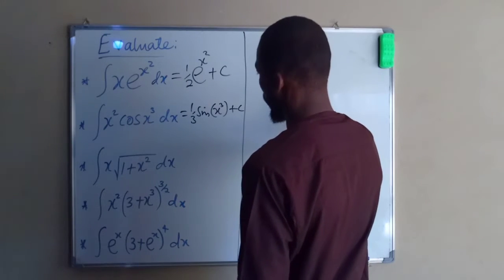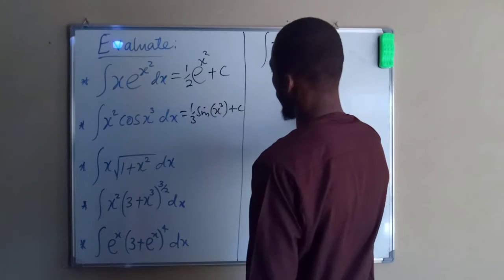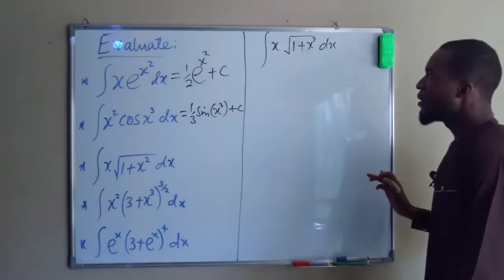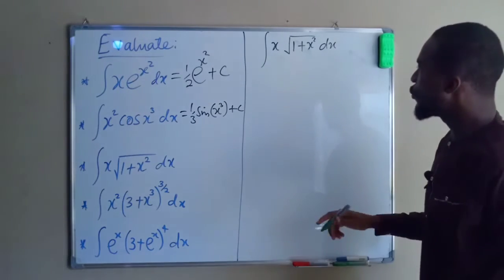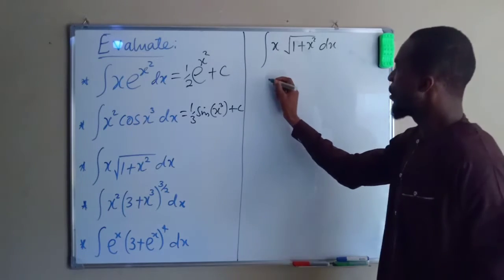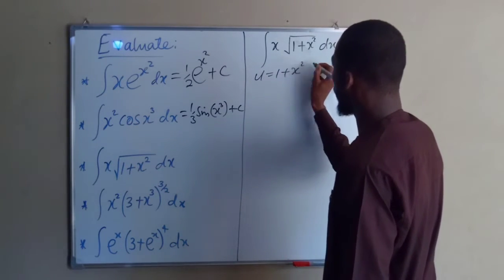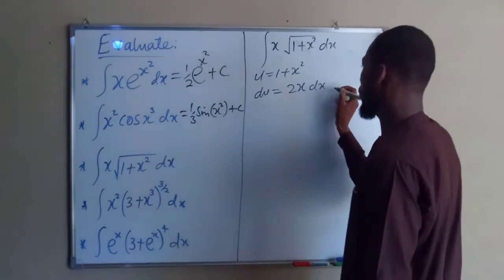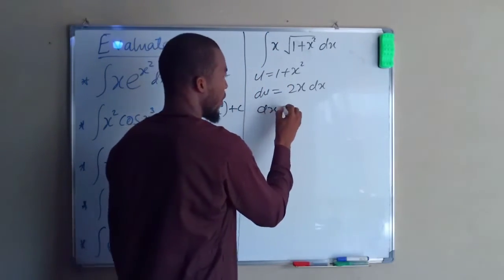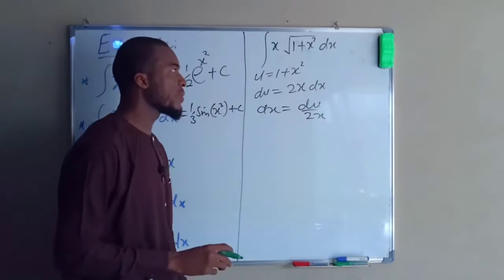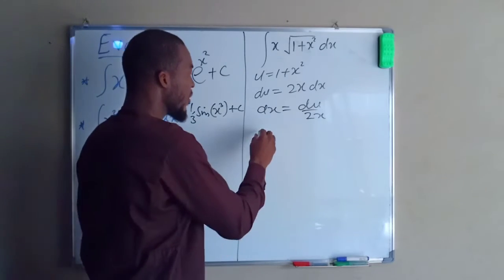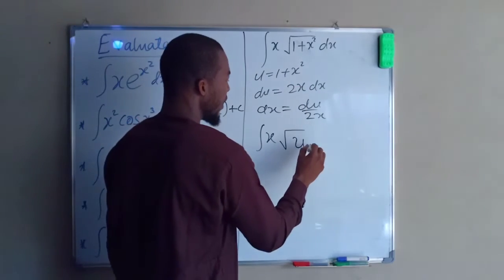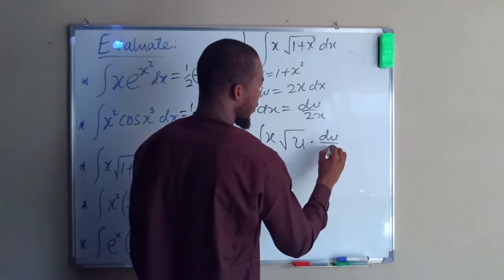Moving to the third problem: the integral of x multiplied by the square root of 1 plus x squared dx. Let 1 plus x squared equal u, because the derivative of the whole of this contains x. So u equals 1 plus x squared. Then du will be equal to 2x dx. But dx is equal to du divided by 2x. So our integration becomes x times the square root of u, and dx is du divided by 2x.